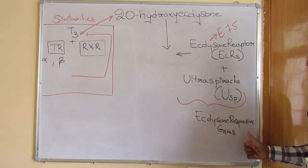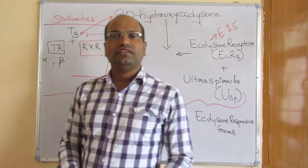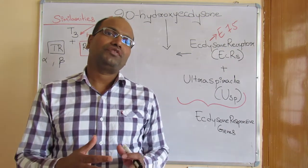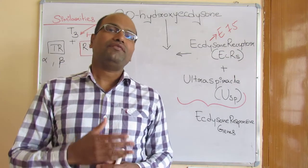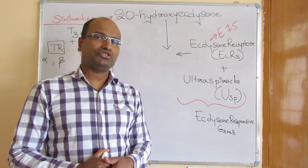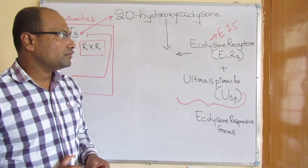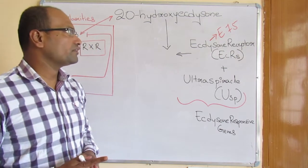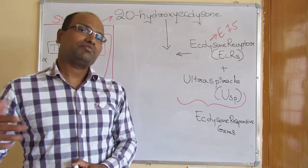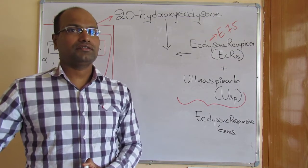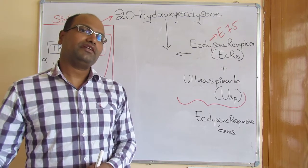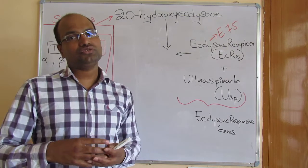In the case of 20-hydroxy ecdysone, upon binding to the EcR-USP complex, it activates ecdysone-responsive genes. These early ecdysone-responsive genes are transcription factors that play an important role in the primary stage of larval development — from one instar stage to another. These early transcription factors then activate the next level of transcription factors, the late-responsive transcription factors. This sequential activation leads to the development of the insect from one larval form to the next stage.